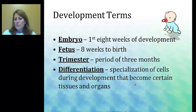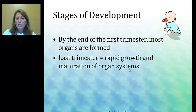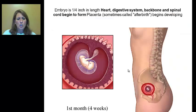By the end of the first trimester, most of the organs have formed — though that doesn't mean they are all functional. For example, the lungs are not completely functional until the last trimester. It is the last trimester where you have a lot of rapid growth and maturation. The lungs are the last to develop, which is why premature babies have respiratory problems if born too soon.